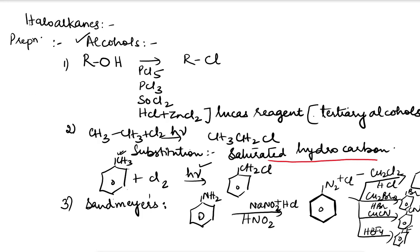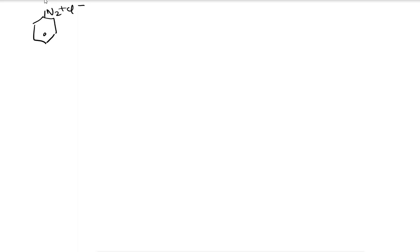These are the things to remember for the preparation of aryl halides — haloalkenes. In the diazonium method, we can also convert it directly to benzene. When diazonium chloride reacts with C2H5OH, we get benzene.